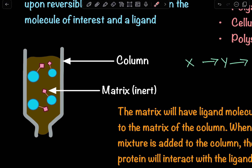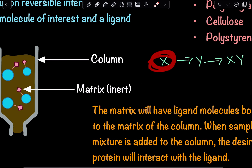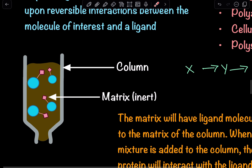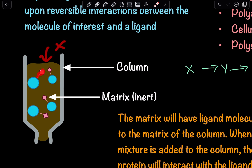Let's say we are trying to isolate molecule X, and molecule X we know interacts with molecule Y to form an XY complex. So in that case, if I want to isolate molecule X, the ligand is going to be Y. When I add in X, the X and Y will interact with one another, whereas everything else is going to flow through the column.